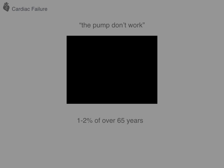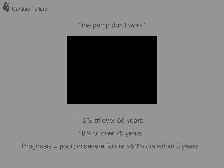Subterranean Homesick Blues was released in 1965, and one to two percent of the population over 65 years will have some degree of cardiac failure. Those aged 20 in 1965 will now be 75 or older, and 10 percent of this population will now have cardiac failure. The prognosis of heart failure is often poor, particularly in severe failure, in which more than 50 percent of patients will die within three years.